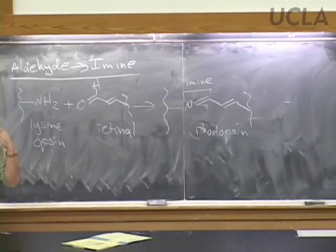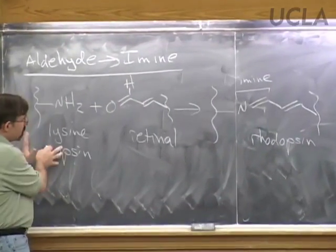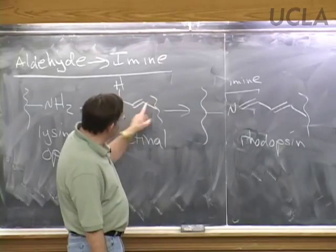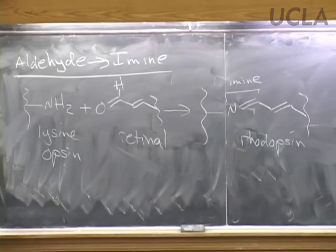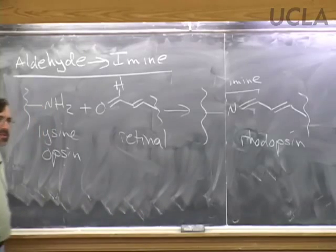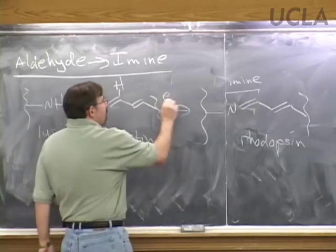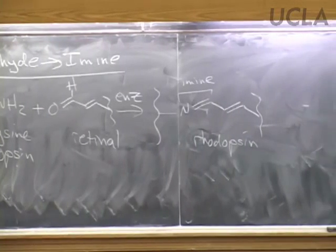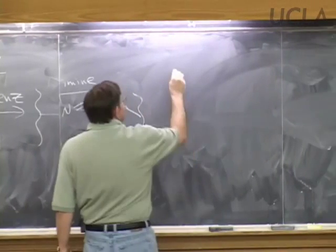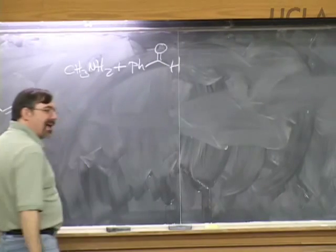Does anybody see why this is important? This is what's going on in your eyes. You are using this reaction to see. This is part of your visual protein apparatus. When retinal comes along, it binds to opsin to make rhodopsin. The fact that retinal is conjugated means rhodopsin is conjugated, and it is the conjugated portion that absorbs visible light, which starts the whole process to signal to your brain that you've seen a photon. For our simple example, we'll use methylamine and benzaldehyde—about as simple an aldehyde and amine as you can get.